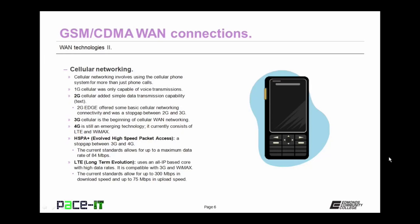Cellular networking involves using the cellular phone system for more than just phone calls. The first version — first G or 1G cellular — was only capable of voice transmissions. As improvements came along, we got 2G — cellular with simple data transmission capabilities such as text messaging. 2G Edge offered some basic cellular networking connectivity and was a stopgap measure between 2G and third generation cellular. 3G cellular is the beginning of cellular WAN networking. It is giving way to 4G cellular, which currently consists of both LTE and WiMAX.